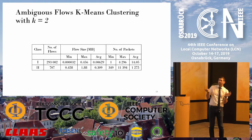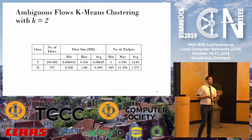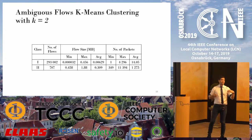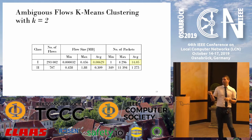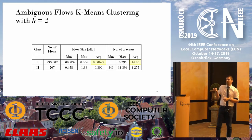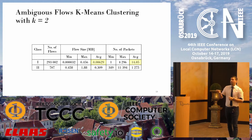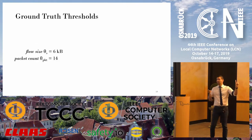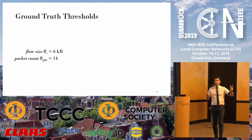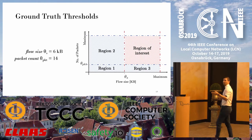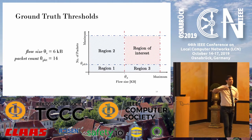The minimum thresholds — meaning the flow size and number of packets — that help us create windows for classification are: 6 kilobytes of flow size and 14 packets for the UniV1 dataset. We used these two features and thresholds to create the ground truth within the dataset. This allowed us to identify four regions rather than three classes, which can divide the dataset into four parts: Region 1, Region 2, Region 3, and Region 4.